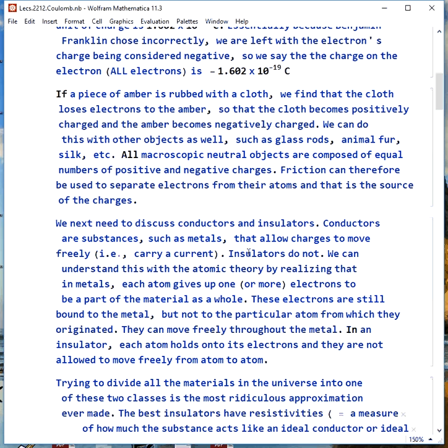They can move freely throughout the entire metal. This makes them free charges. In an insulator, on the other hand, each atom holds on to its own electrons and they are not allowed to jump from atom to atom easily.